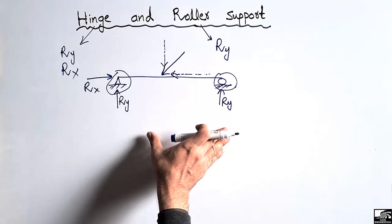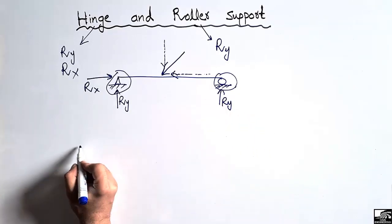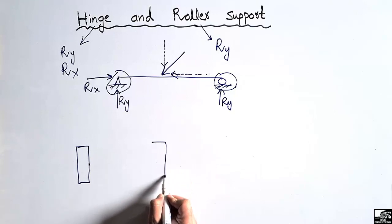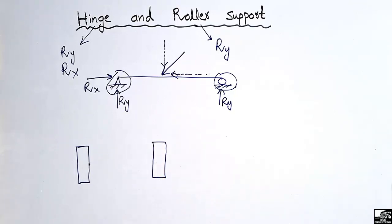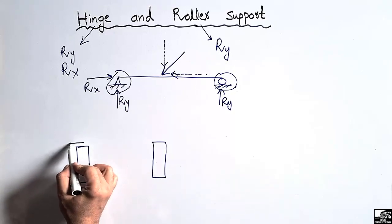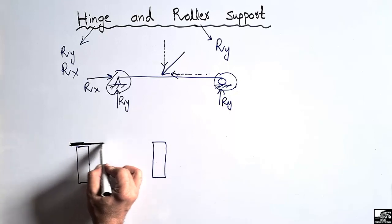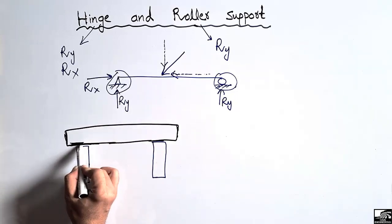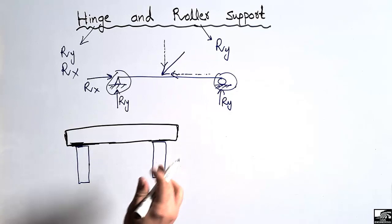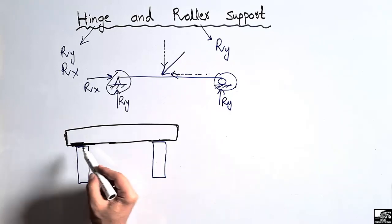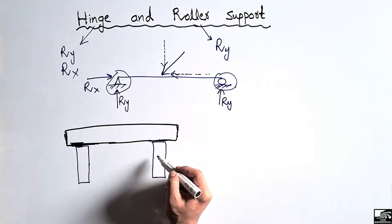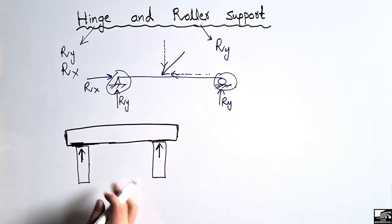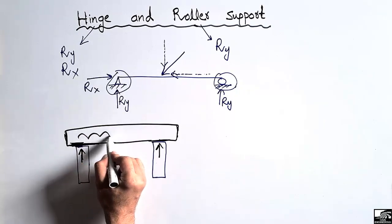Now where can we find their practical examples? Let's consider this is a column and this is another column, and on top of these columns we place a girder or beam. When the girder or beam is placed on these two columns with no connection between these two members, then these two columns will act as roller supports.